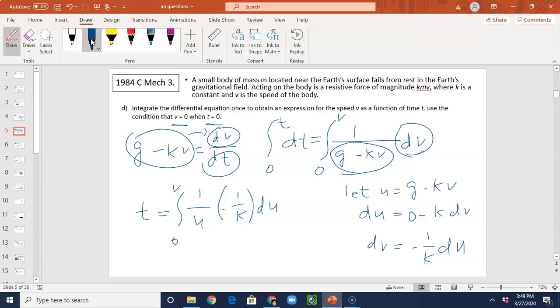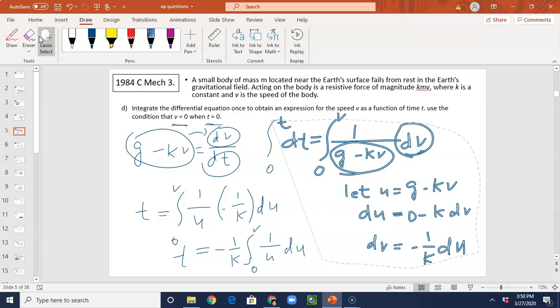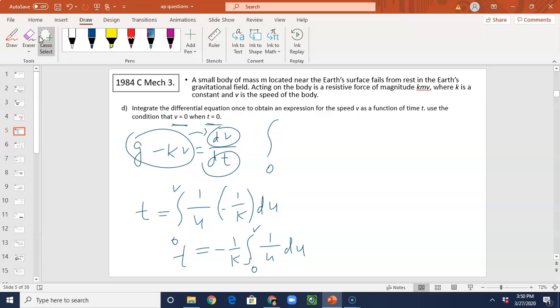We know K is negative 1 over K. This is integrated sign 0 to V, 1 over U DU. We know this 1 over x dx that is the log, the natural log. So T equals to this. Now I'm going to erase the rest so we have more room to work.